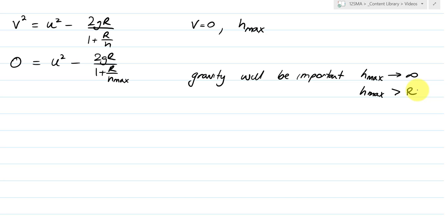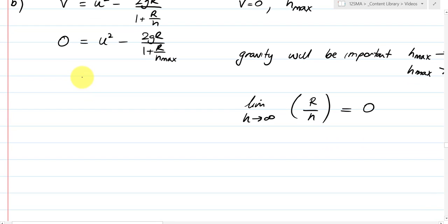That's going to be really important. So h approaches infinity, and in particular with respect to r it's quite large. And what that means is that the limit as h effectively goes to infinity of r over h is going to be equal to zero. As we get a larger and larger height, then r divided by h will be effectively equal to zero.